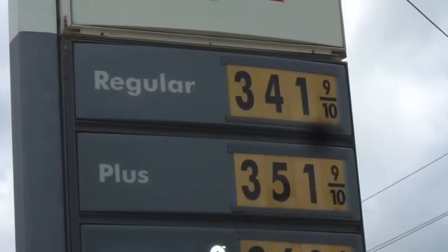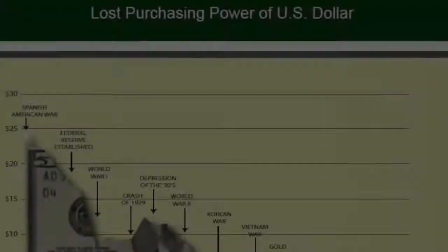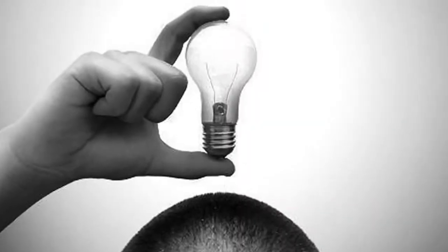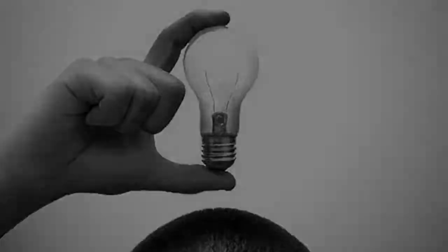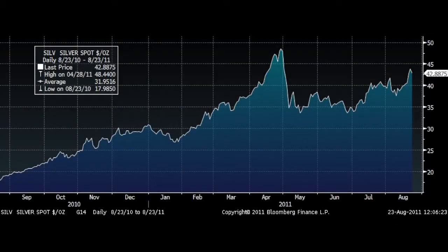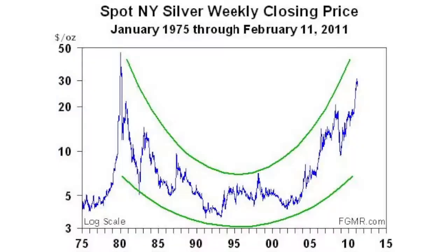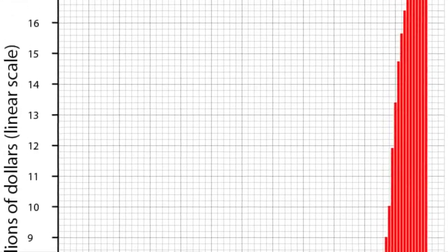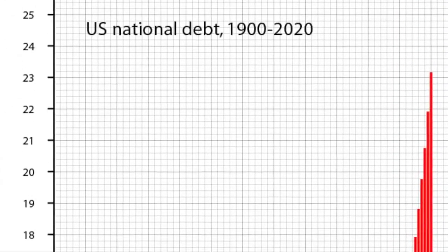When you understand that prices are not necessarily going up as much as the purchasing power of the dollar is declining, then you have made an important intellectual leap. In May of 2011, when silver got close to its 1980 high of $50 an ounce, everybody was crowing that it was the bubble top. The reality is that $50 in 1980 had a ton more purchasing power than it does now.